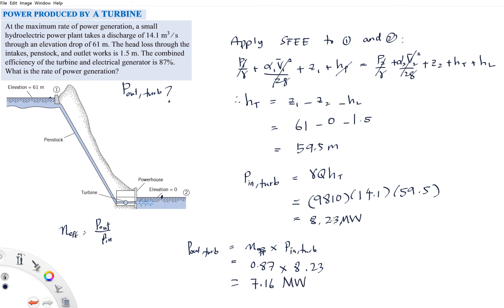I hope the examples are sufficient for you to apply the steady flow energy equation to turbo machines. In the next lecture I will talk about head losses — there are two types: major loss and minor loss. See you guys again, thank you.